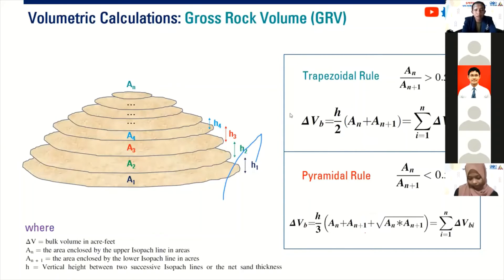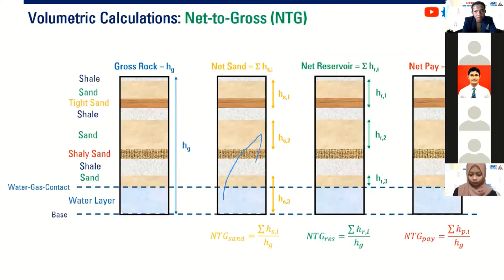So you know here, you can see here delta Vb, which is the delta of the bulk volume. So if we sum all of the bulk volumes, we can obtain the total gross rock volume of our reservoir. That's one. We need to know the volume of our reservoir, the gross rock volume.